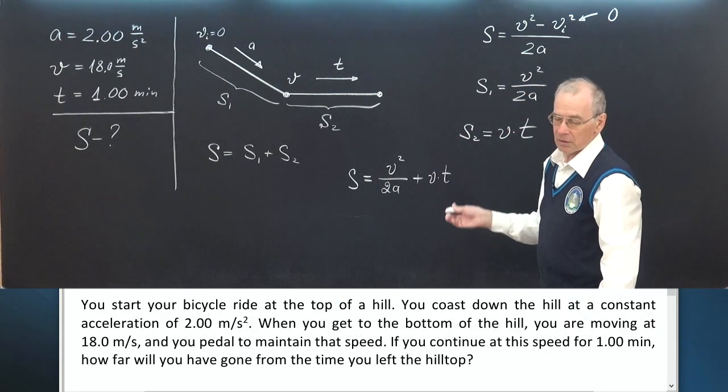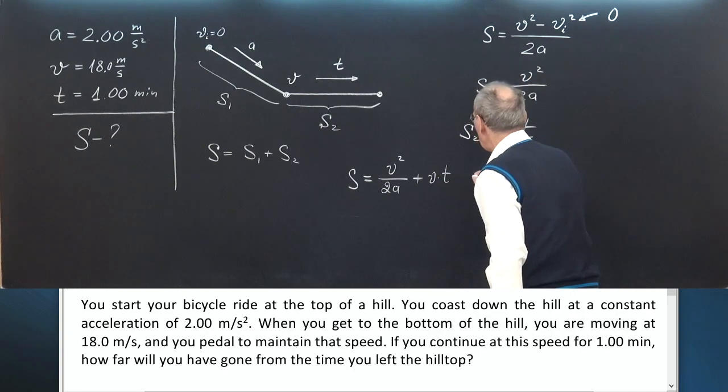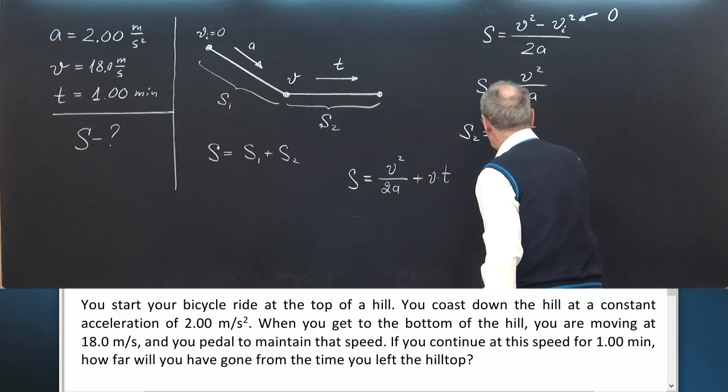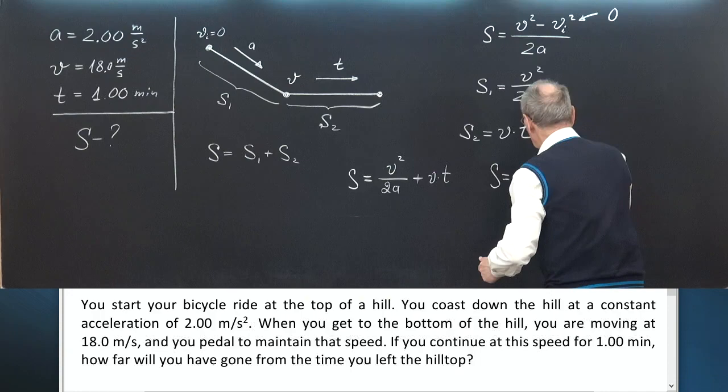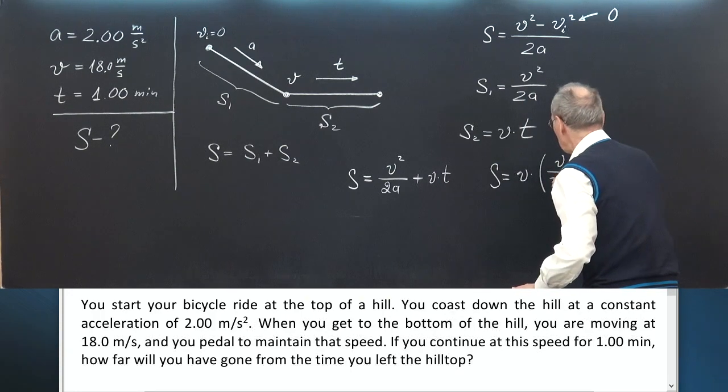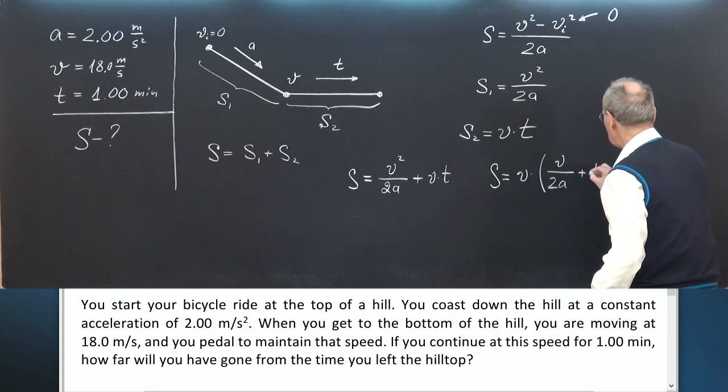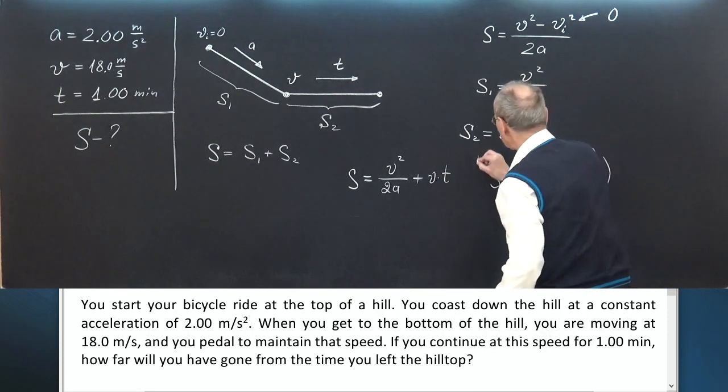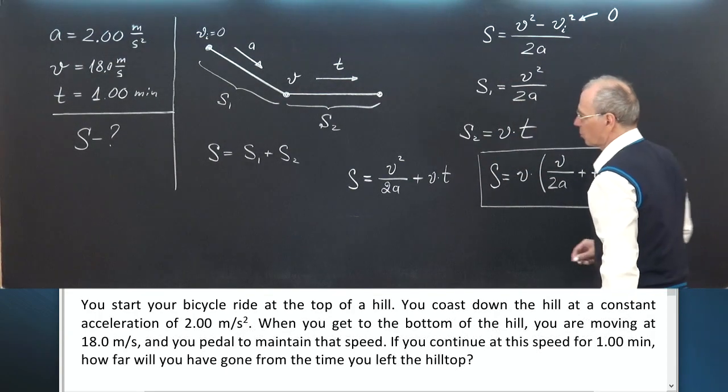Let's add these distances and have S equals V squared over 2A plus V times T. Now take the common factor out of the brackets and finally S equals V, common factor, times V over 2A plus T. This is our final formula.